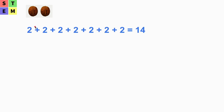So how many walnuts do I eat in a whole week, which is seven days? I've got two for Monday, two for Tuesday, two for Wednesday, two for Thursday, two for Friday, two for Saturday, and two for Sunday — so in total we've got seven twos.